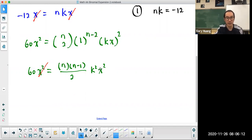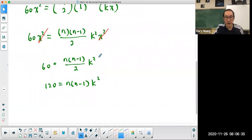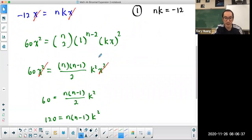Again, I'm going to cancel the x squared because all I care about here is the coefficient. What I'm going to get here is 60 equals n times n minus 1 over 2 times k squared. Now I'm going to bring the 2 to the other side to make this look a little nicer. And this is going to be my second equation.